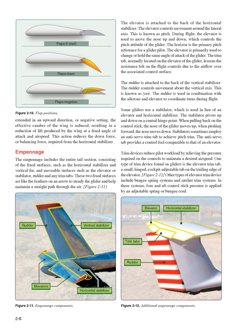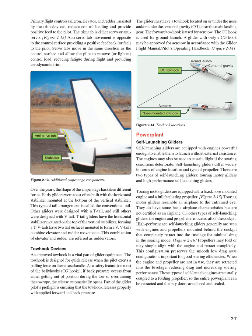Trim devices reduce pilot workload by relieving the pressure required on the controls to maintain a desired airspeed. One type of trim device found on gliders is the elevator trim tab — a small, hinged, cockpit-adjustable tab on the trailing edge of the elevator. Other types of elevator trim device include bungee spring systems and ratchet trim systems. In these systems, fore and aft control stick pressure is applied by an adjustable spring or bungee cord. Primary flight controls — aileron, elevator, and rudder — assisted by the trim devices, reduce control loading and provide positive feel to the pilot. The trim tab is either servo or anti-servo. Anti-servo tab movement is opposite to the control surface, providing positive feedback or feel to the pilot. Servo tabs move in the same direction as the control surface and allow the pilot to remove or lighten control load, reducing fatigue during flight and providing aerodynamic trim.